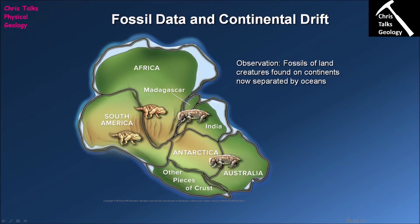We can see that there are fossils shared between all the continents. The classic example is a tree-like plant called Glossopteris. Glossopteris liked conditions similar to that of modern-day Houston — relatively warm, relatively humid conditions. And we find Glossopteris fossils across all of the southern hemisphere continents: South America, Africa, India, Antarctica, and Australia. The problem is Glossopteris doesn't like extreme conditions. It wouldn't like the freezing cold of Antarctica, and it wouldn't like the very hot, dry conditions of Australia. So how could you have a plant existing on all these continents at the same time if the continents were in their current positions with their current environmental conditions? It just doesn't work.